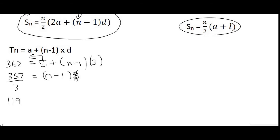You can then divide by 3 to get rid of this over here, which gives us 119 equals to n minus 1, and then solving for n, you end up with 120.